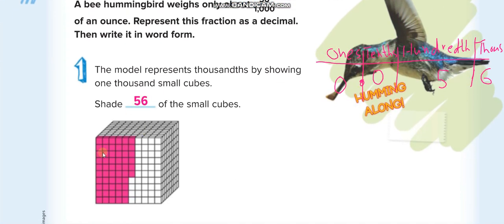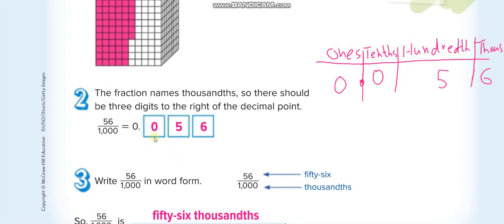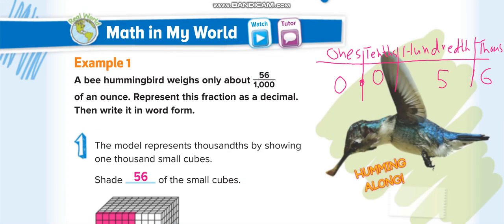Here is how we shade it: the total number of boxes is one thousand, and out of one thousand we shade only 56, so 56 over one thousand. We write it as zero point zero five six. How do we read it? We read the number 56 and the place value of the last digit, which is thousandths. So we read it: fifty-six thousandths.